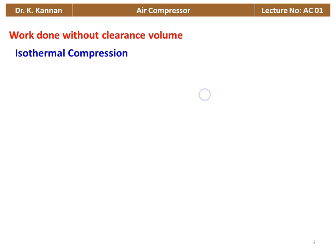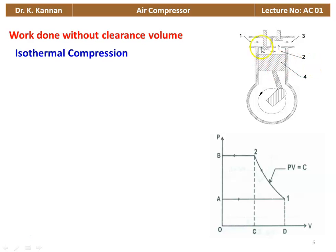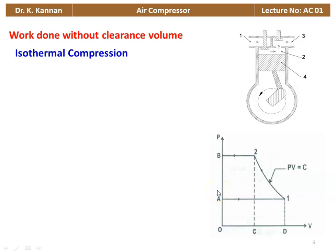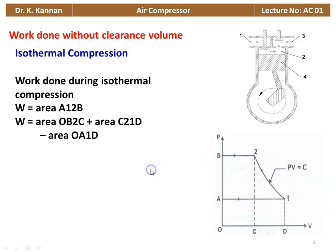Work done without clearance volume — isothermal compression. The working of the piston cylinder arrangement has already been discussed. There are two strokes: A to 1 is the suction stroke, 1 to 2 is compression where the line follows the law PV = constant, and 2 to B is the delivery. The area of the PV diagram indicates the work done. The work done during isothermal compression is area A–1–2–B.